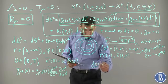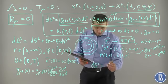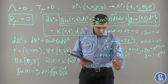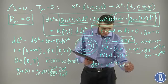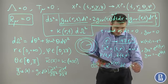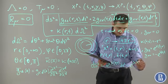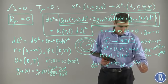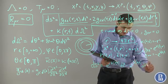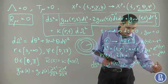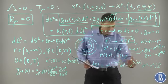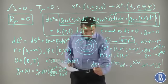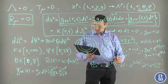After renaming the components into more standard form, if we name g_tt as exponent of the function nu, which is function of r and t, and g_rr as minus exponent of lambda r, t, then we arrive at the following expression: ds squared equals exponent of nu r, t dt squared minus exponent of lambda r, t dr squared minus r squared d omega squared. This is a metric we are going to work with in the following.